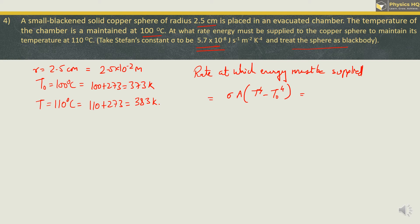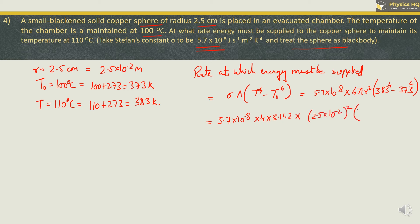Sigma is given as 5.7 × 10⁻⁸. The area of a sphere is 4πr². So we have: 5.7 × 10⁻⁸ × 4 × π × (2.5 × 10⁻²)² × (383⁴ − 373⁴). This needs to be solved with the help of a logbook. When you solve it, you get the answer as 0.9624 watts. If you have any doubt in solving with logs, please refer to the video by clicking on the 'i' button on the top right corner.